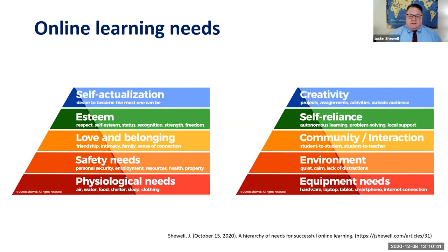The last need Maslow talks about is self-actualization — this is really where learning takes place, the desire to improve yourself and make yourself better. In online learning, I translated that into a need for creativity. A lot of times online learning is just grammar and vocabulary practice — rote memorization — because those are easy activities for teachers to create. If that's all you're doing during this pandemic, then your students aren't getting the learning they deserve. You have to bring in the same things you were doing in face-to-face classes: projects, assignments, group work, publishing to an outside audience — all of those are needed for students to continue that same level of learning.